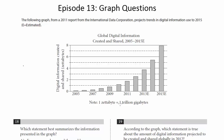They tell us that a zettabyte is one trillion gigabytes. Gigabytes are basically data — so this is the amount of global digital information created and shared over these periods. Notice they tell us that 'e' means estimated. So at the very least these three years are estimates, because this was done in 2011. But what do we see? We see this constant — in fact, not constant, but exponential — increase in the amount of data created and shared over this period of time.